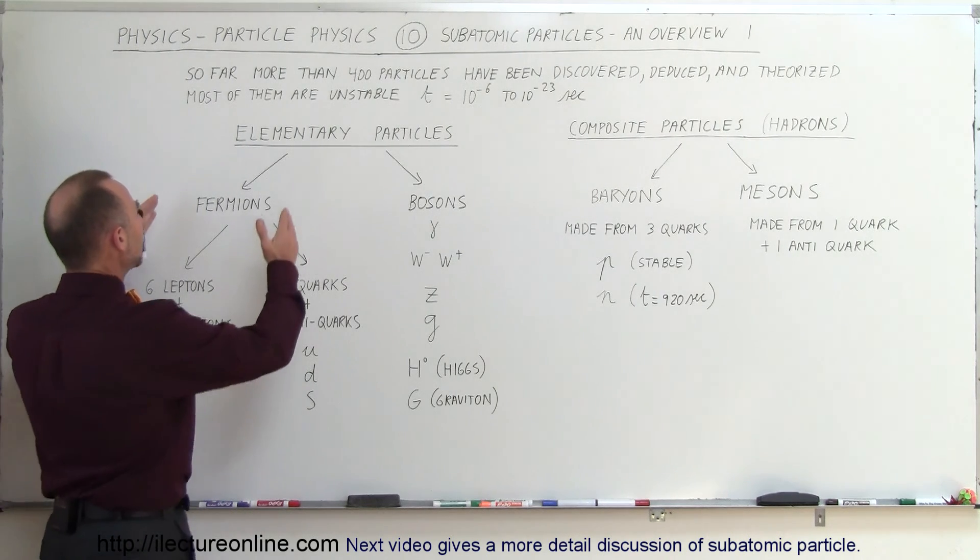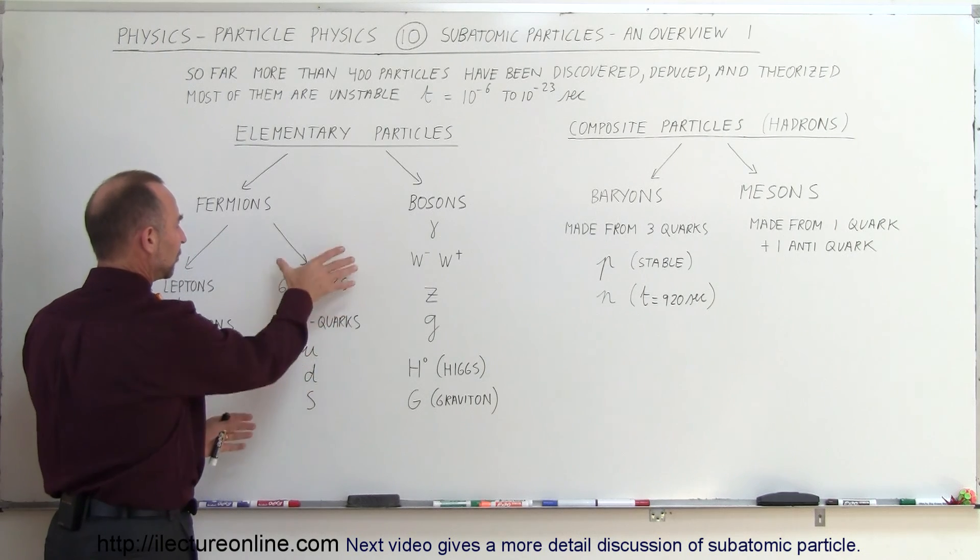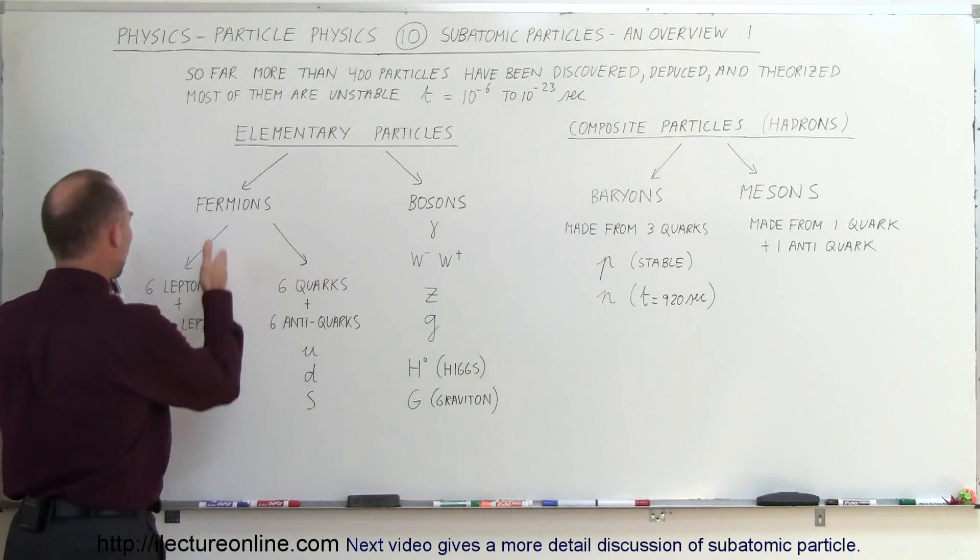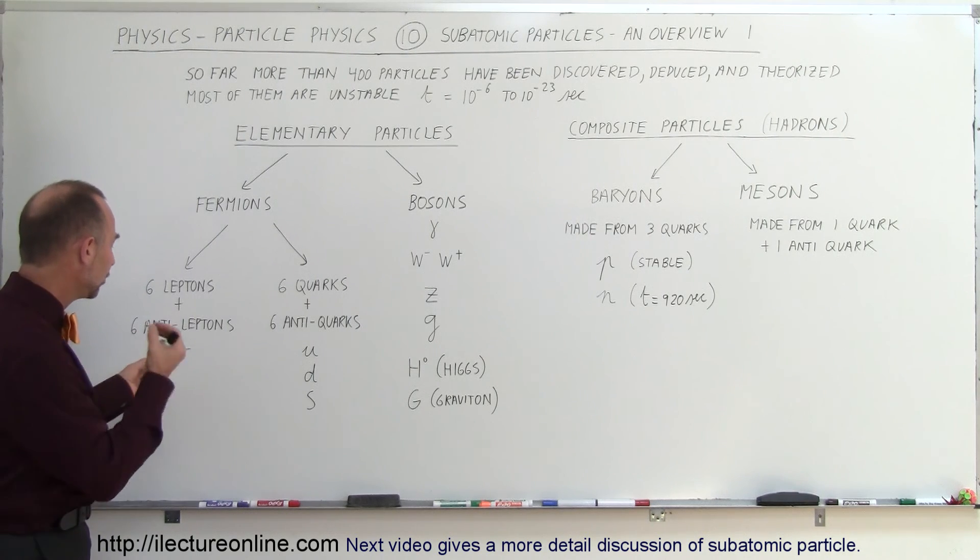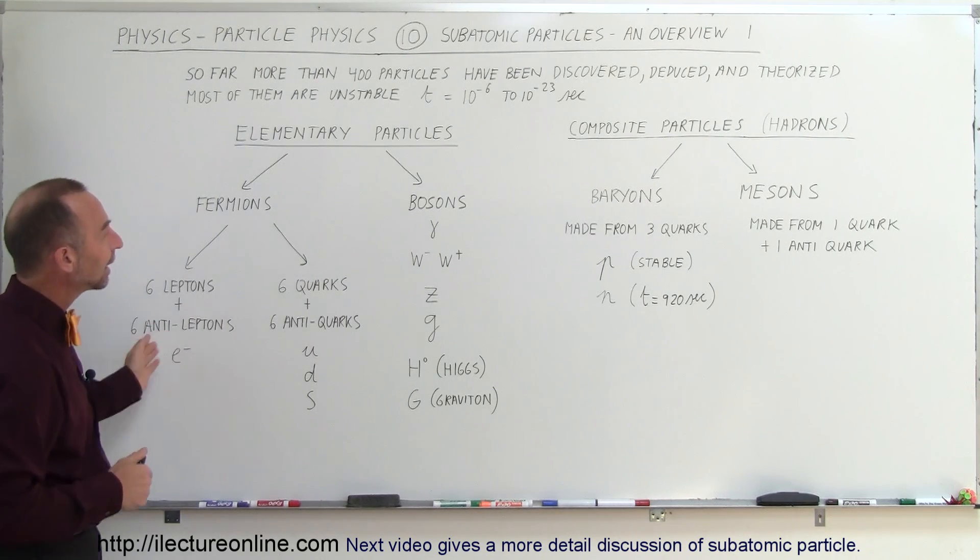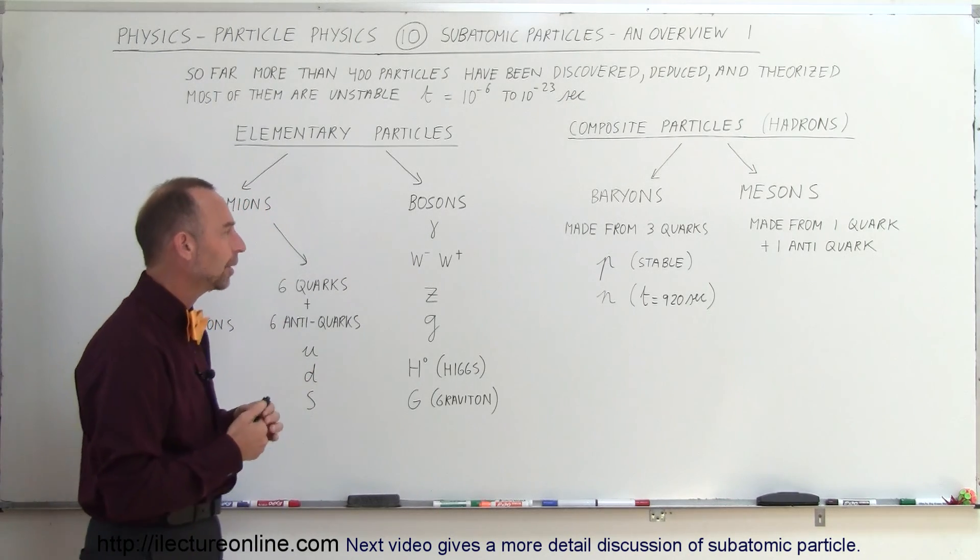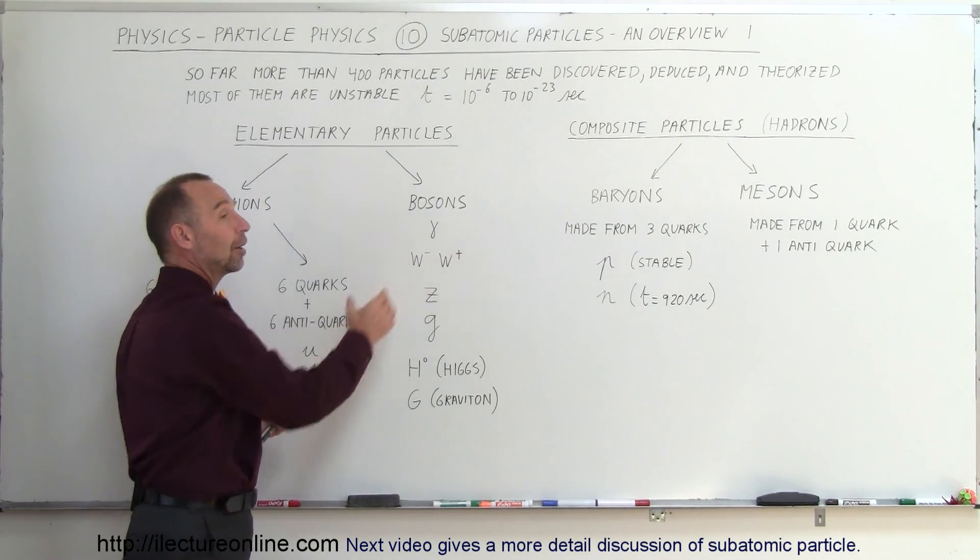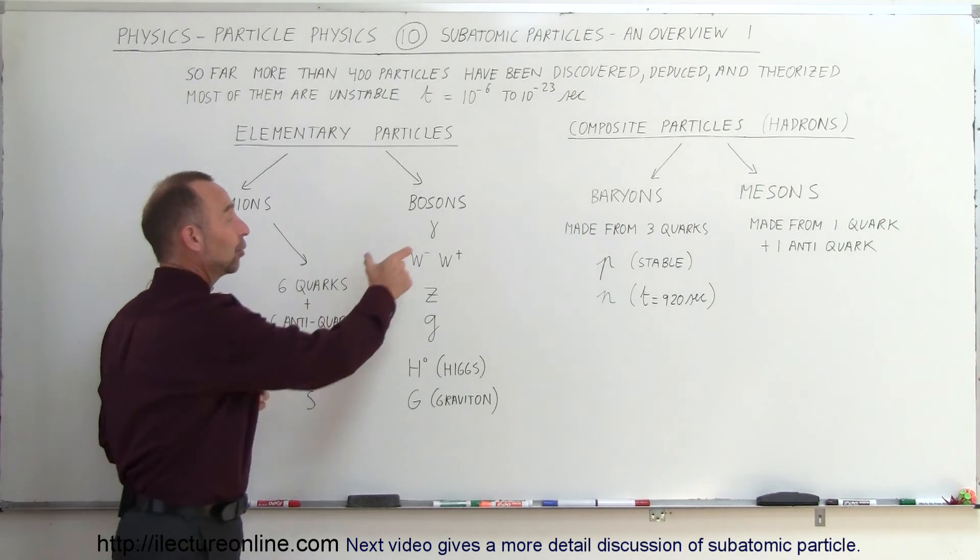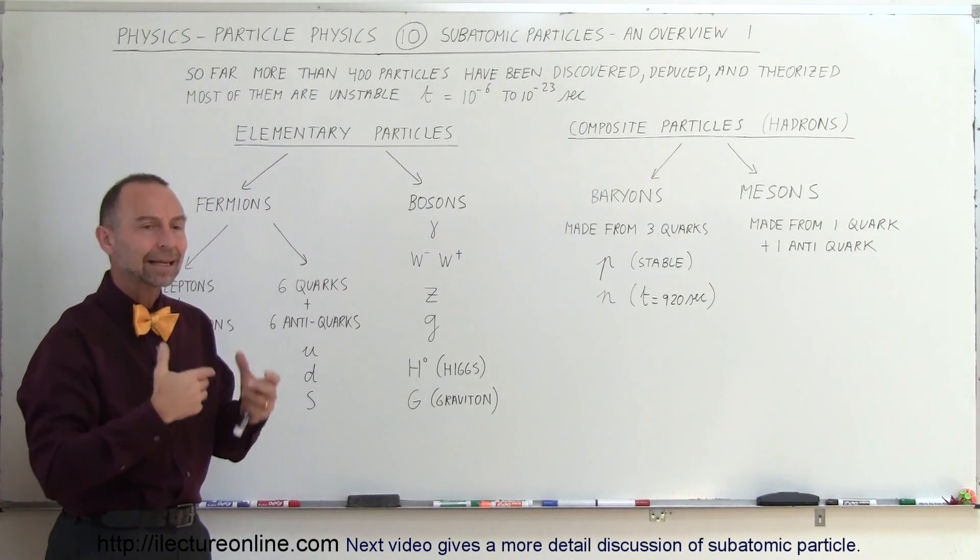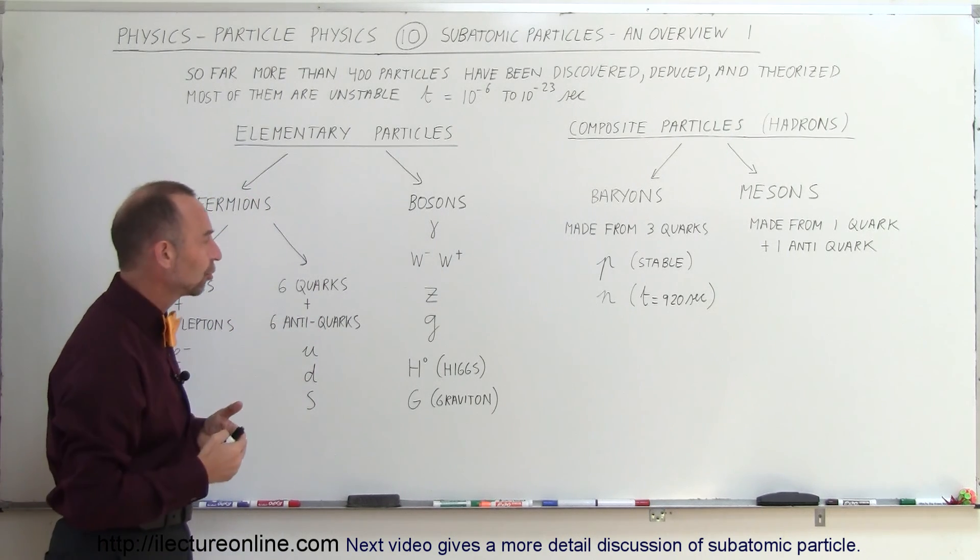So those are the fermions that either make up the large particles that are conglomerates of the basic elementary particles, or we have the leptons, such as the electron that exist in unitary formation. And then we have what we call the bosons. Now, the bosons are a very different kind of particle. It includes the photons, and the photons are just simply quantized chunks of energy, and that is the mediating part of the electric field or of the electromagnetic force.